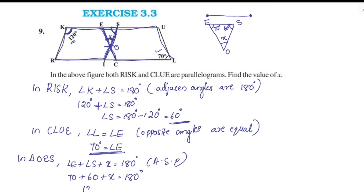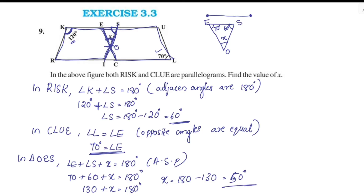130 plus x equals 180 degrees. Therefore x equals 180 minus 130 equals 50 degrees. So x is equal to 50 degrees.